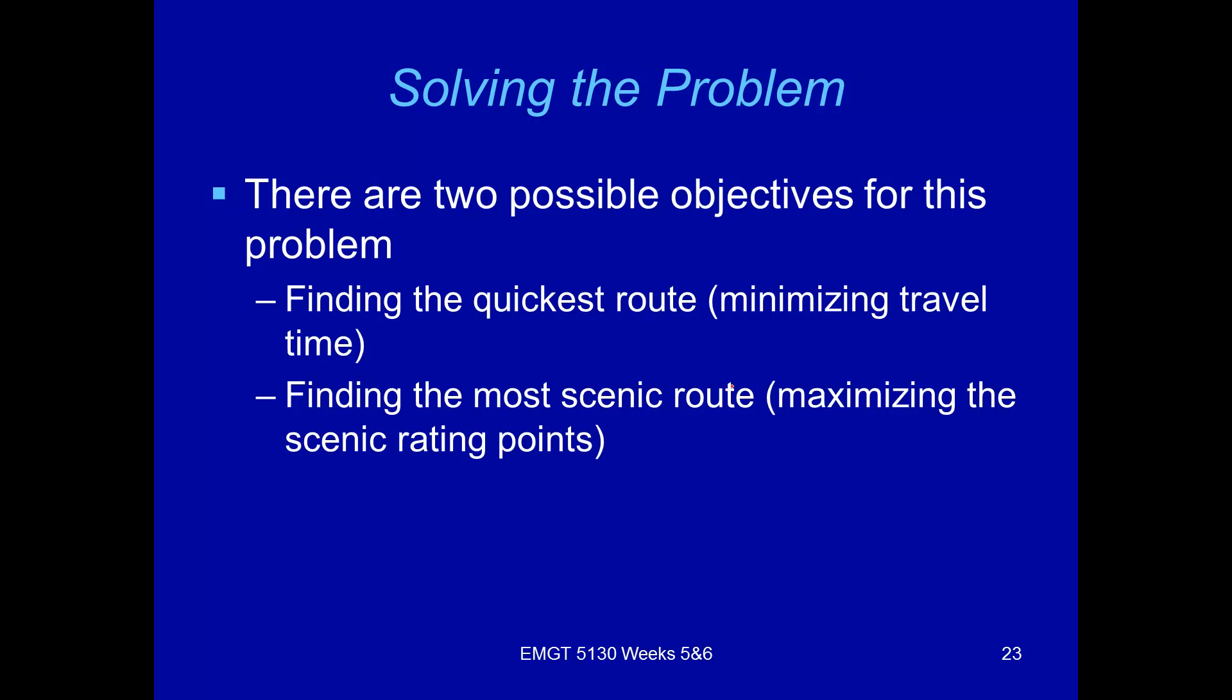And in Chapter 7, we're going to talk about how to incorporate multiple objectives into one problem and trying to find a balance or like a balanced solution for the entire problem. But in this case, in this chapter, we're going to just solve this problem with two separate objectives. One being the minimized travel time. So we'll use this as the objective, solve the problem and then we're going to change the objective to maximize the scenic rating points and solve the problem again. So we have two separate problems with two separate solutions.